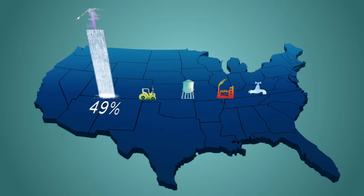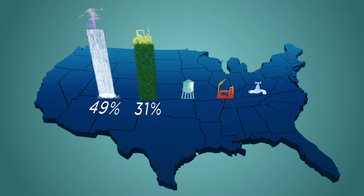About 49% is used in thermoelectric power production, while agricultural irrigation makes up about 31%. 11% goes to public use in our cities and towns.